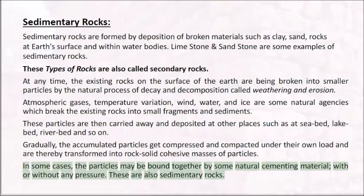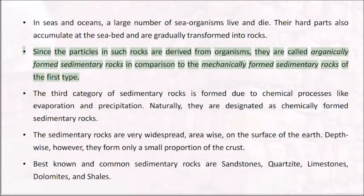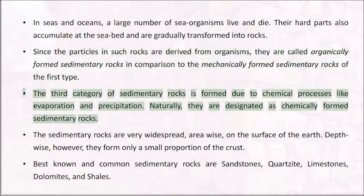In some cases, the particles may be bound together by some natural cementing material, with or without any pressure; these are also sedimentary rocks. In seas and oceans, a large number of sea organisms live and die; their hard parts also accumulate at the sea bed and are gradually transformed into rocks. Since the particles in such rocks are derived from organisms, they are called organically formed sedimentary rocks, in comparison to the mechanical sedimentary rocks. The third category is formed due to chemical processes like evaporation and precipitation, designated as chemically formed sedimentary rocks.